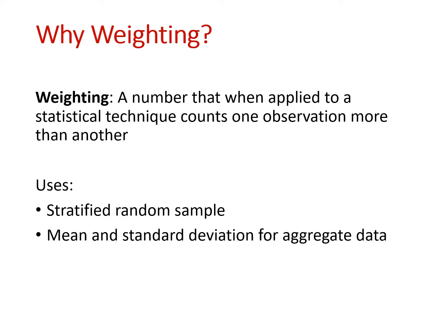First, weighting comes up a lot in survey research if the survey is a stratified random sample. Stratification introduces bias in that each observation is not selected with equal probability, so a weight is added in the analysis to correct for the bias. If additional bias is detected in the survey separate from stratification, this might also be corrected with a weight.